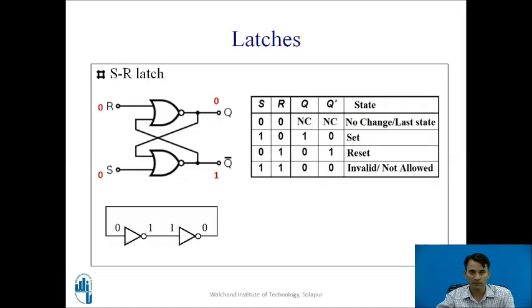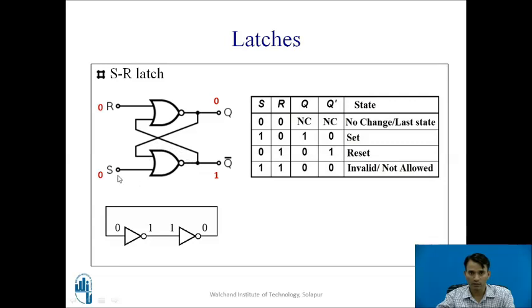As an example, consider the SR latch built using two NOR gates — a universal logic gate. Each NOR gate has two inputs: one input comes from the feedback of the other NOR gate's output, and one new external input. The first NOR gate receives input R and feedback from the second NOR gate's output. The second NOR gate receives input S and feedback from the first NOR gate's output, forming the feedback path.